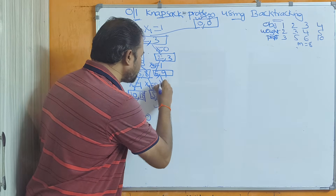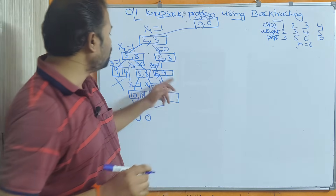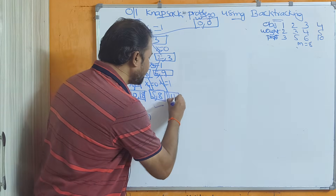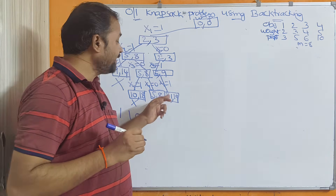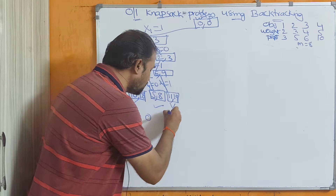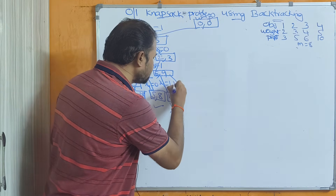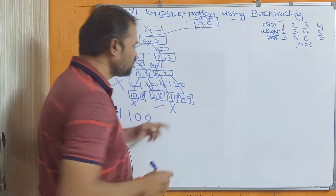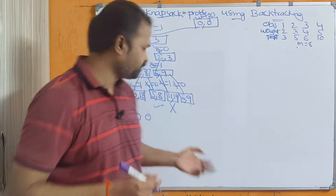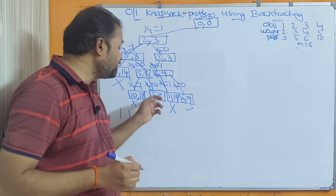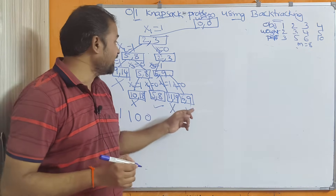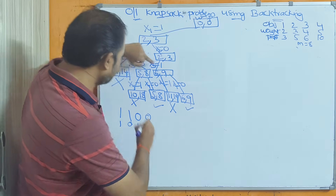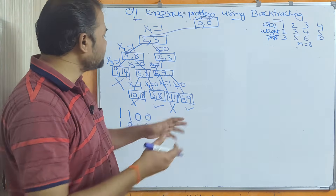At x4=1, we consider the fourth object: weight 6+5=11, profit 9+10=19. We cannot place 11 kg in 8 kg, so kill this node. Backtracking, x4=0 gives us the previous value (6,9). We can place 6 kg in 8 kg, and the profit is 9. This is a better solution than the previous profit of 8. The solution vector is x1=1, x2=0, x3=1, x4=0, written as {1,0,1,0}, with profit 3+6=9.